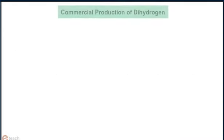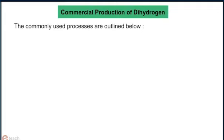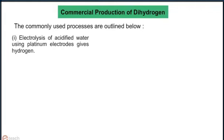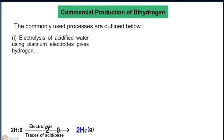Commercial production of dihydrogen. The commonly used processes are outlined below. Method 1: Electrolysis of acidified water using platinum electrodes gives hydrogen.